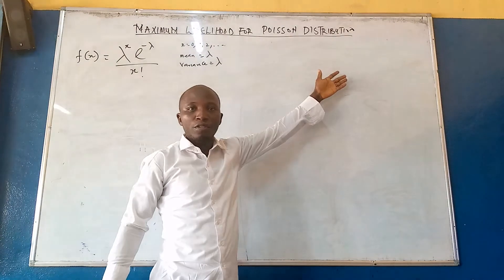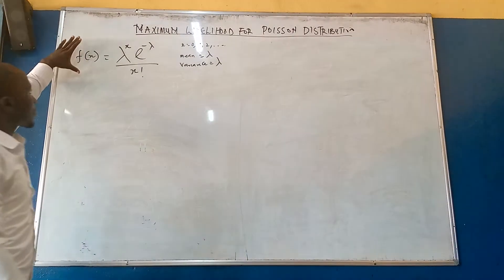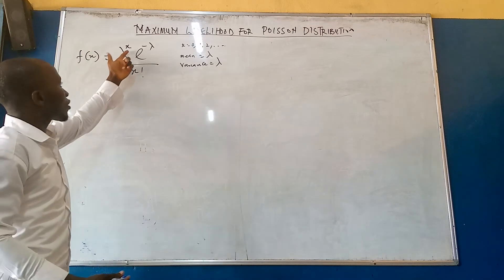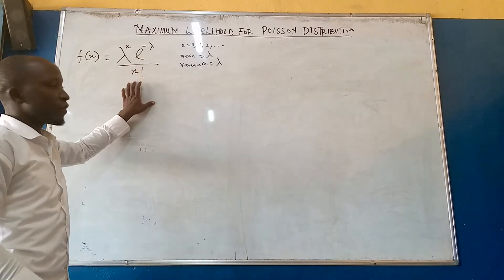Maximum likelihood for Poisson distribution. f(x) is the probability density function of Poisson distribution, lambda raised to x, exponential negative lambda, divided by x factorial.